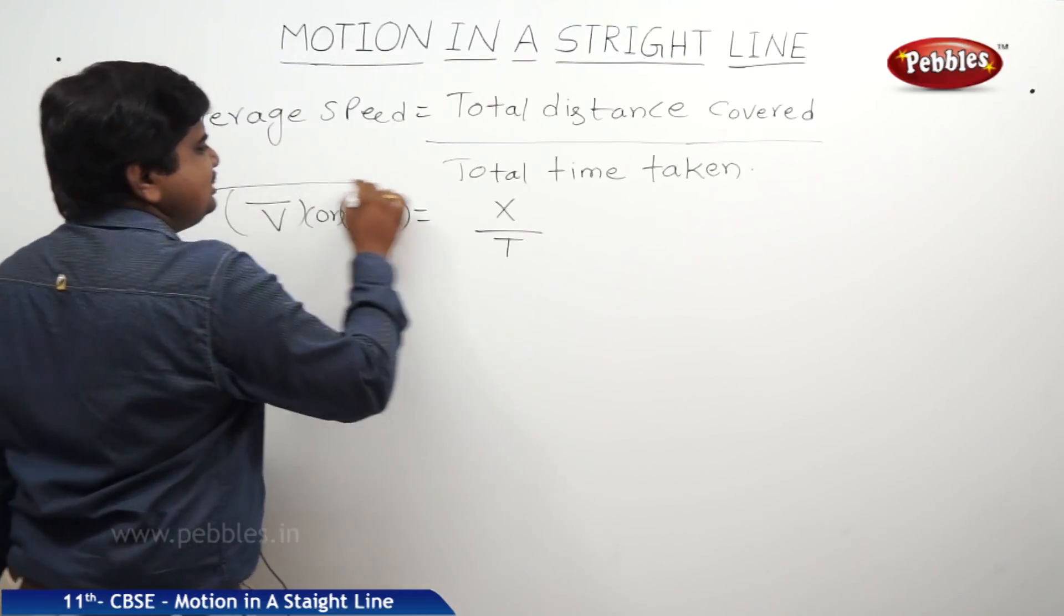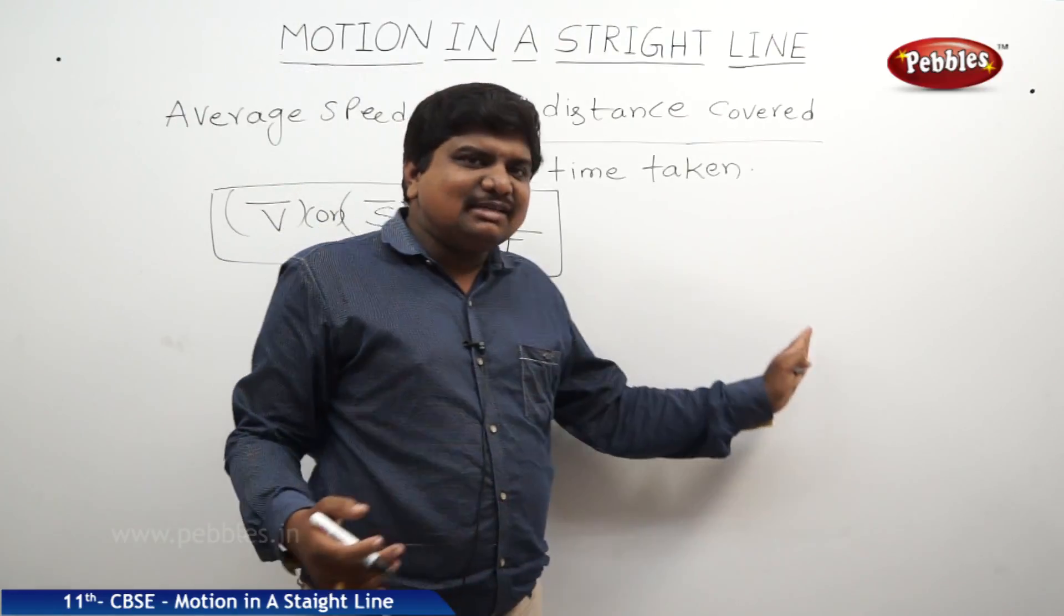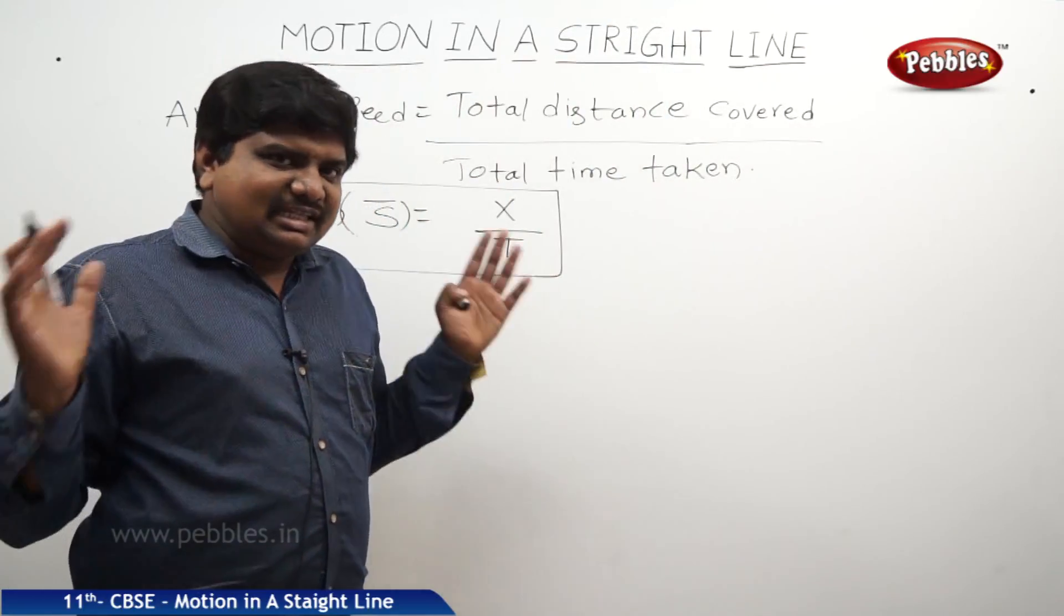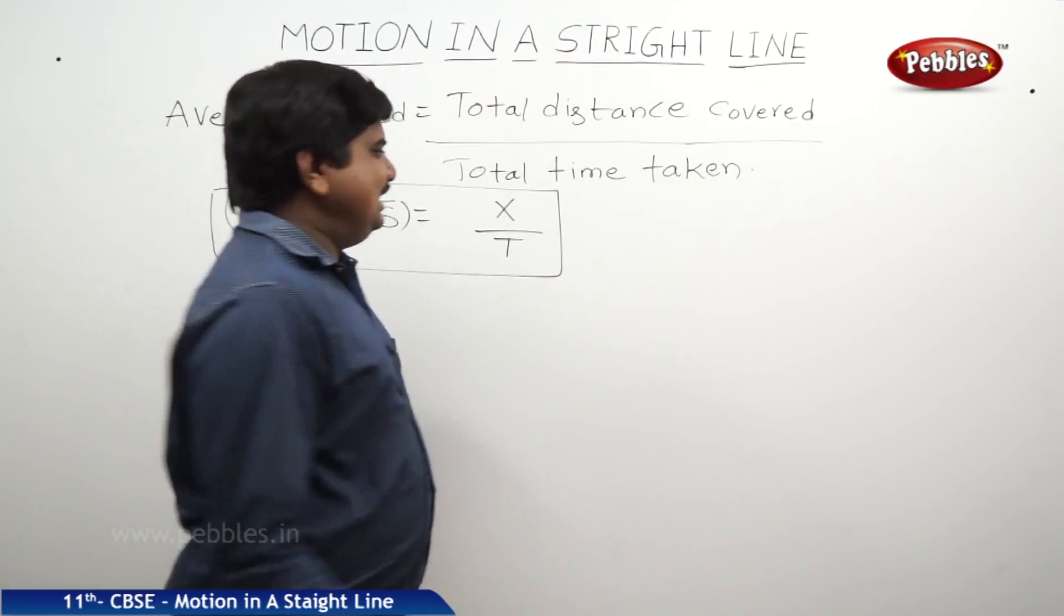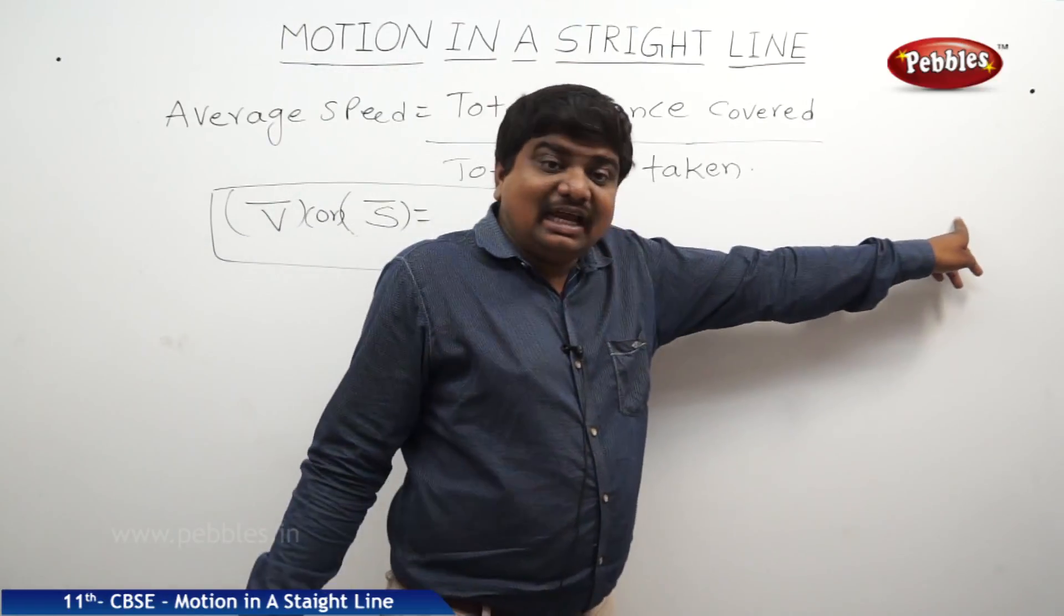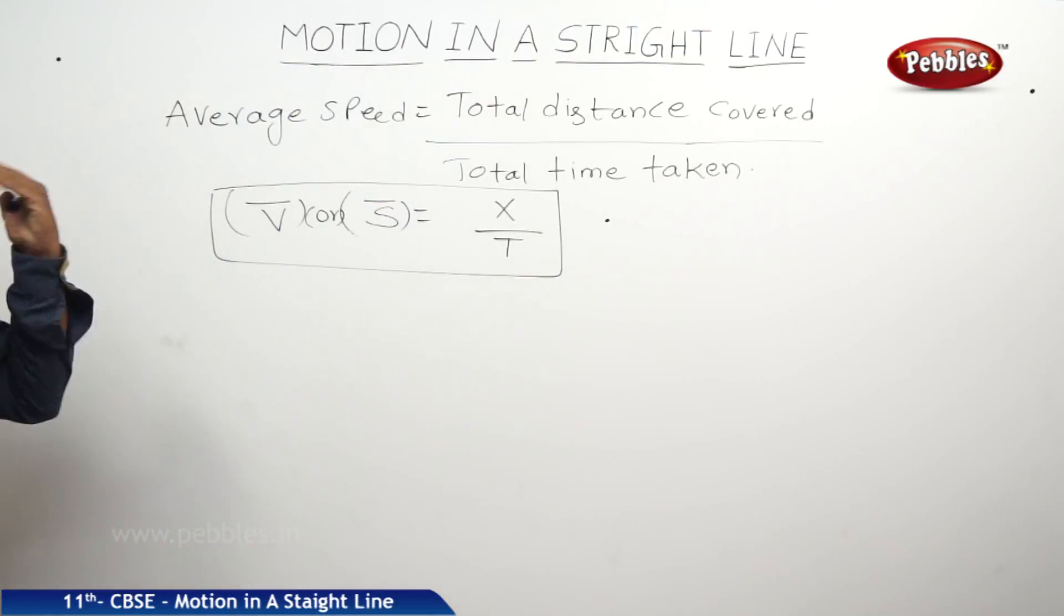So the average speed means S bar or V bar. Means it is a mean speed. So we are not at all calculating the internal disturbances from initial position to final position. Whatever may be the disturbances in the middle, we are just calculating the time at the starting point and time at the destination point.